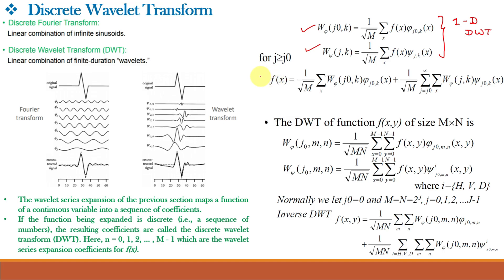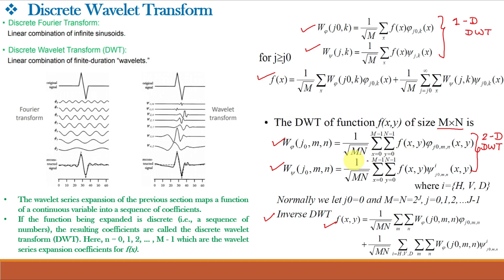Taking the inverse DWT, we obtain our signal or image f(x) back. Given separable two-dimensional scaling and Wavelet functions, the extension of 1D DWT to 2D DWT is a straightforward process. For a 2D image f(x,y) of size M×N, where M is rows and N is columns, the DWT is given by the equation for the scaling function and the equation for the Wavelet function. We can restore our original image by taking the inverse DWT.